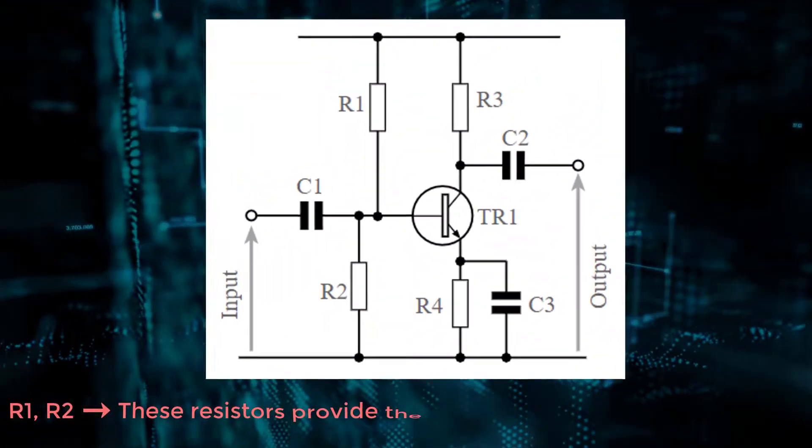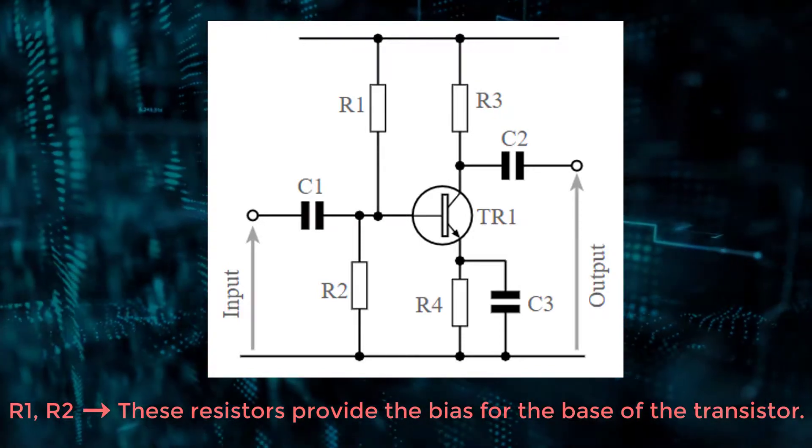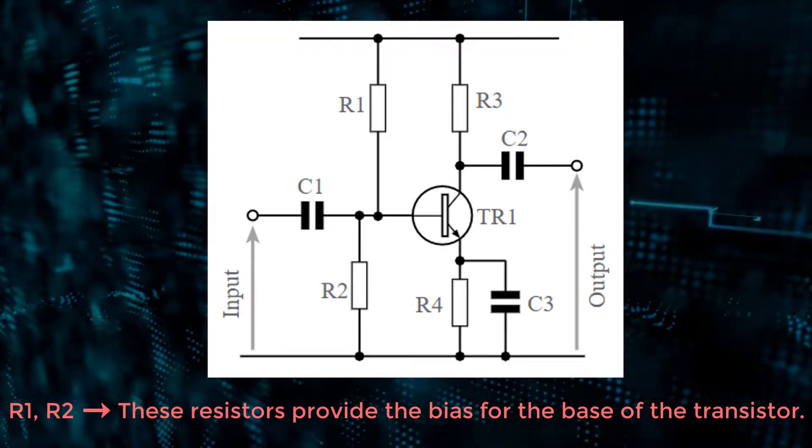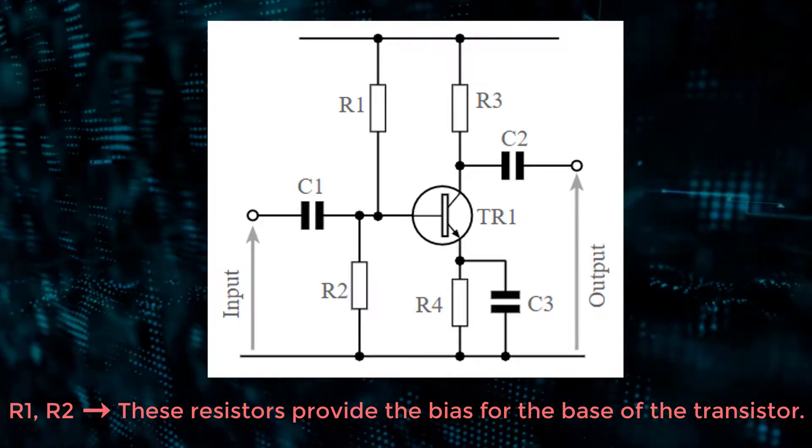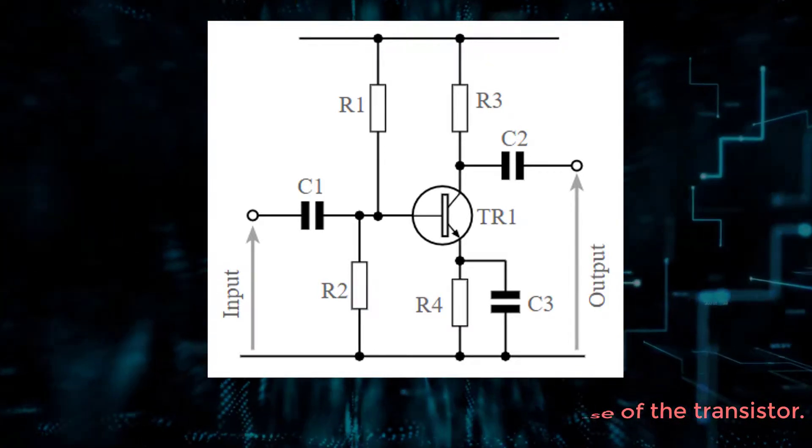Within the circuit, there are a number of components that provide different functions to enable the overall circuit to operate in the fashion required. Where R1, R2, these resistors provide the bias for the base of the transistor.